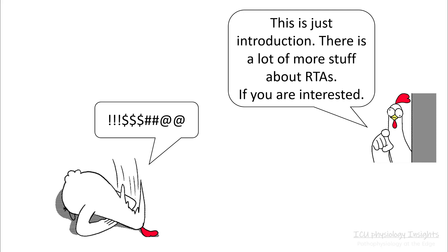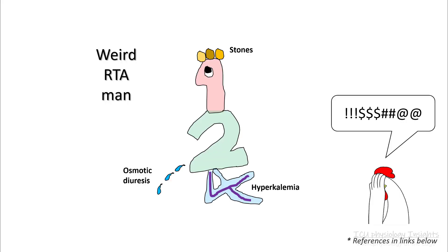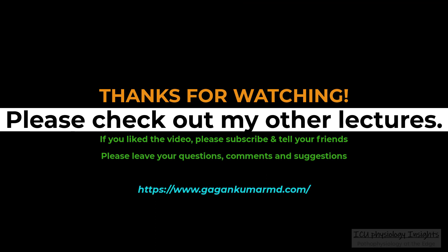So this is just a baseline for you. There is a lot more about RTAs and the rabbit hole goes really deep — go through it if you're a nephrologist or interested in the topic. To summarize: type 1 has stones, type 2 has osmotic diuresis, and type 4 has hyperkalemia. Thank you, and I'll see you next time.